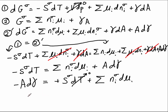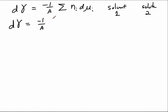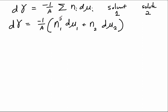Let's remind ourselves what kind of system we're talking about: we have a solvent (chemical component 1) and a solute (chemical component 2). Writing out this sum explicitly for these two components, we have the number of moles of the solvent at the surface times the change in chemical potential of the solvent, plus the number of moles of the solute at the surface times the change in chemical potential of the solute — all at the Gibbs dividing surface.